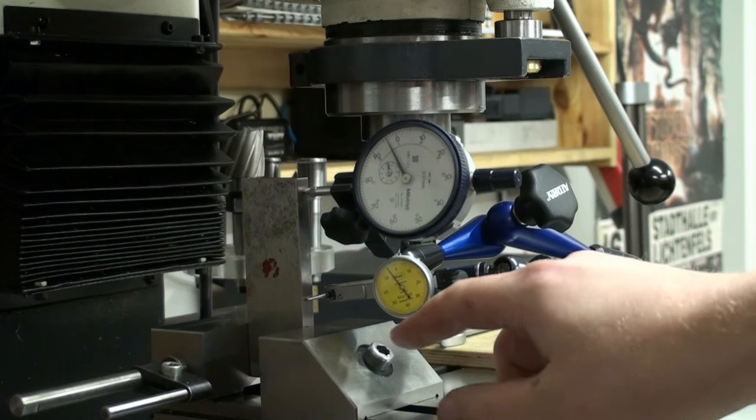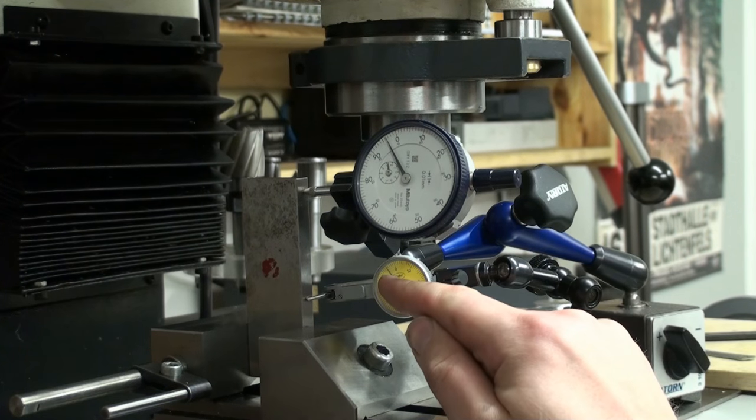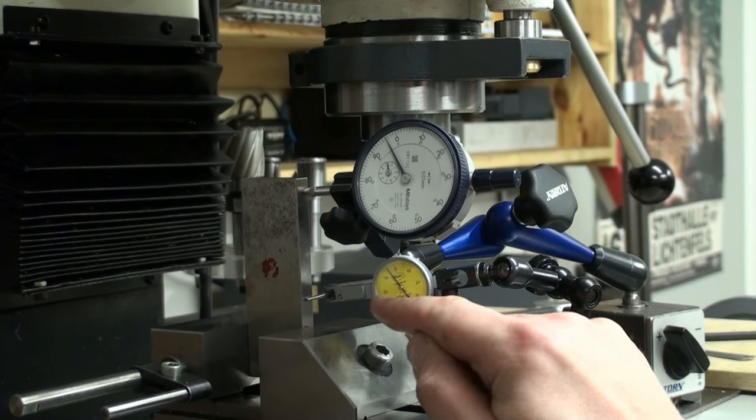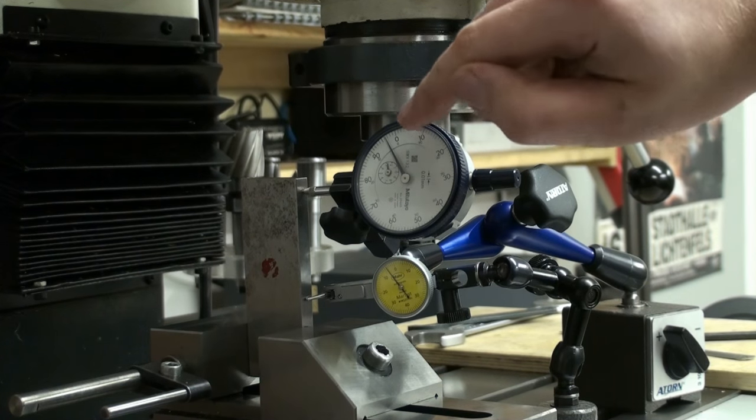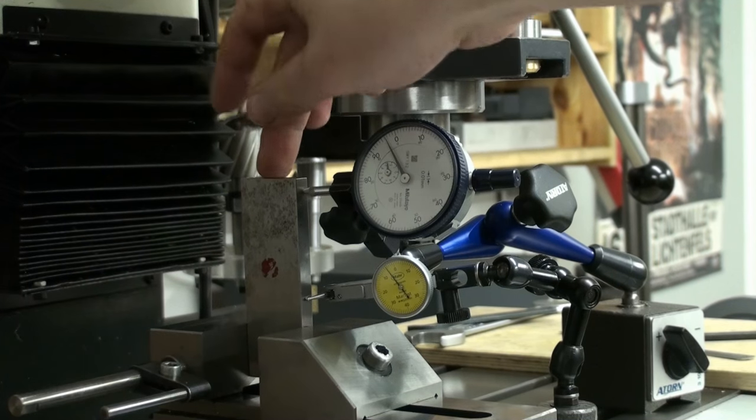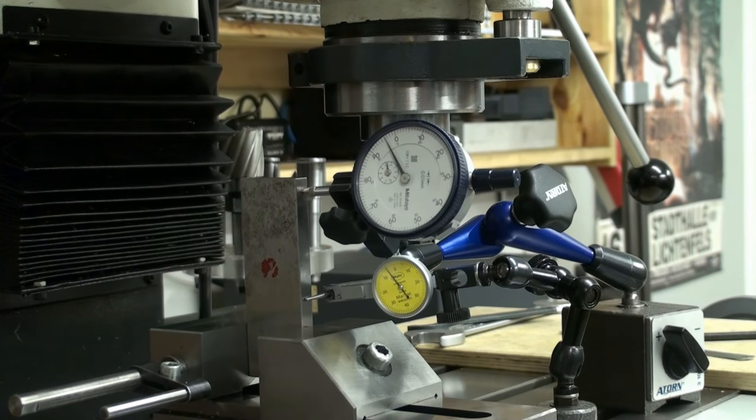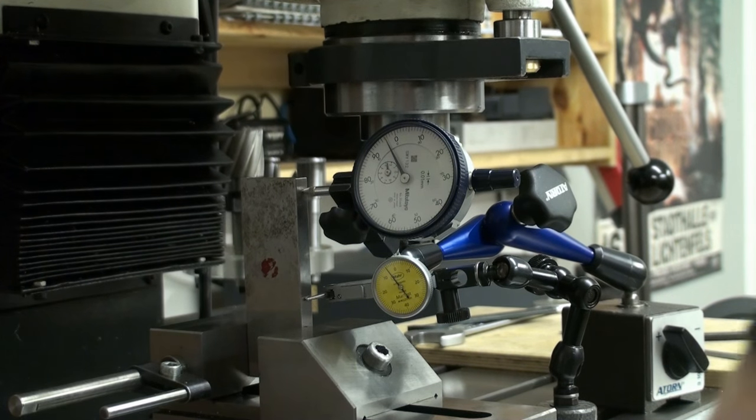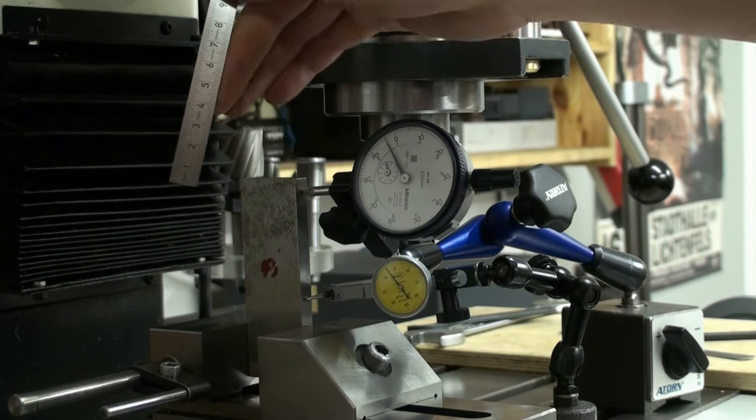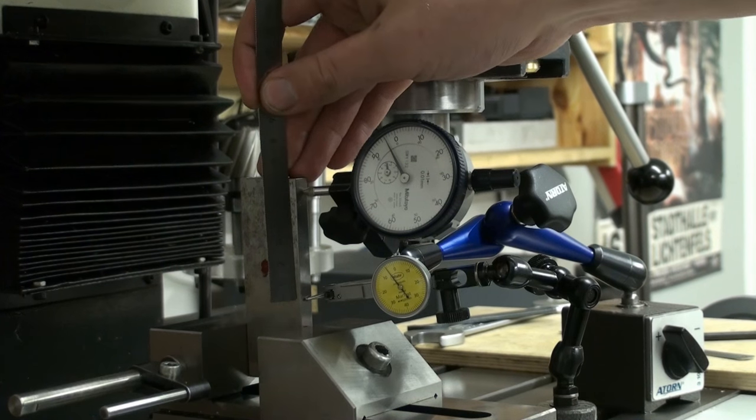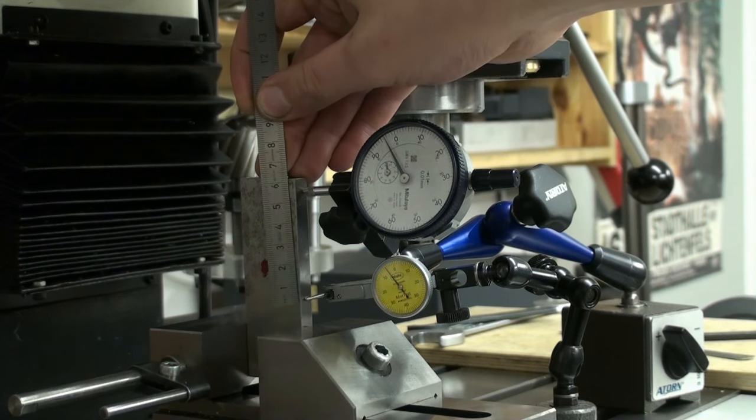Okay, that's way better than the shaper vise. We have five hundredths of a millimeter down here and three and a half hundredths of a millimeter up here. So this part only got pushed out of square one and a half hundredths of a millimeter over a distance of 60 millimeters.